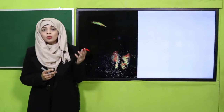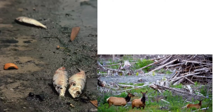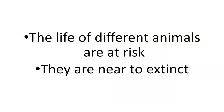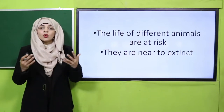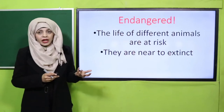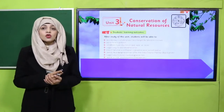For example, due to pollution, many animals die. Underwater animals' lives are under threat. Similarly, when we cause deforestation — cutting down trees — we are disturbing the natural habitat of so many animals. Similarly, hunting animals is also a threat to different animals. So the lives of different animals are at risk; they are near to extinction.